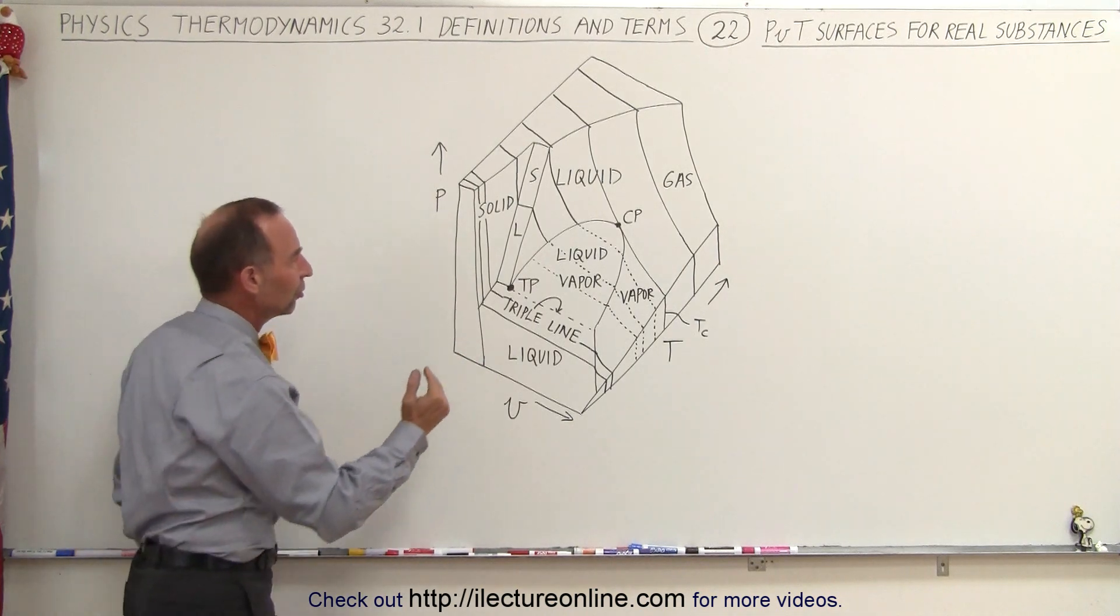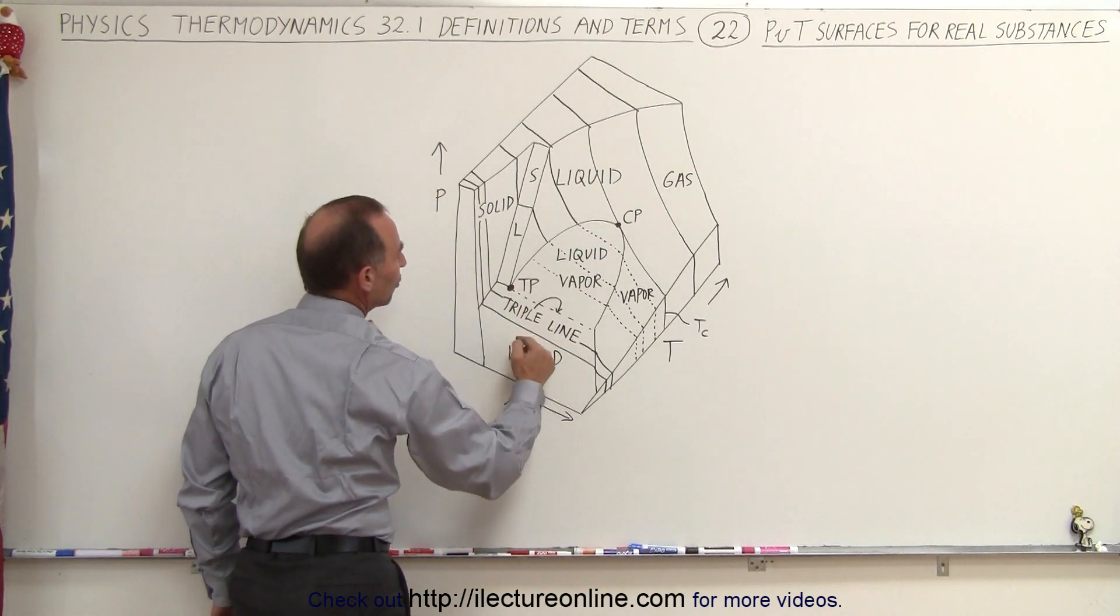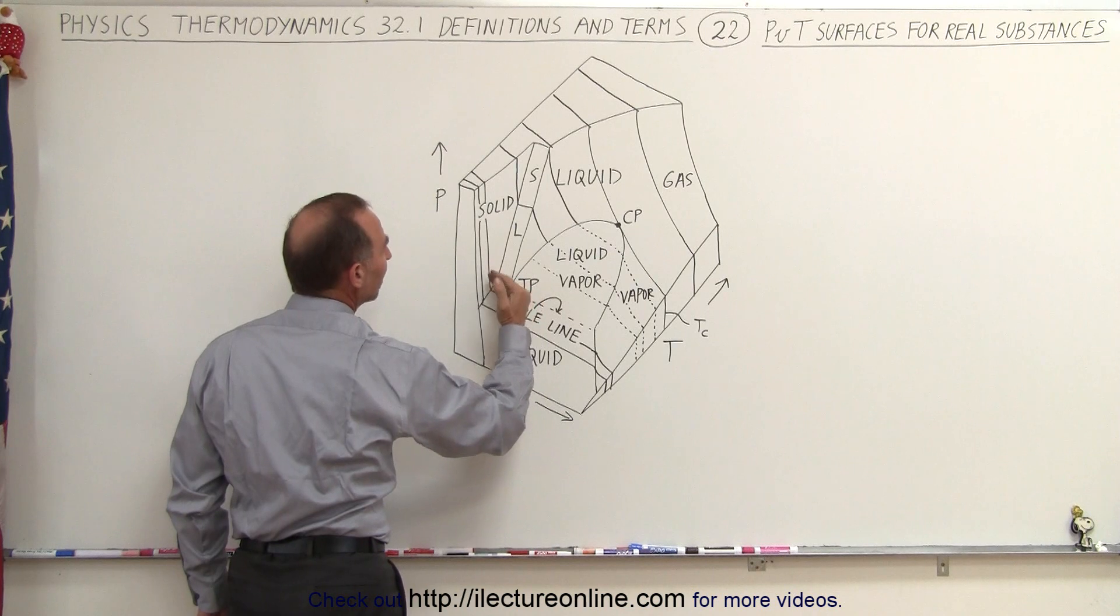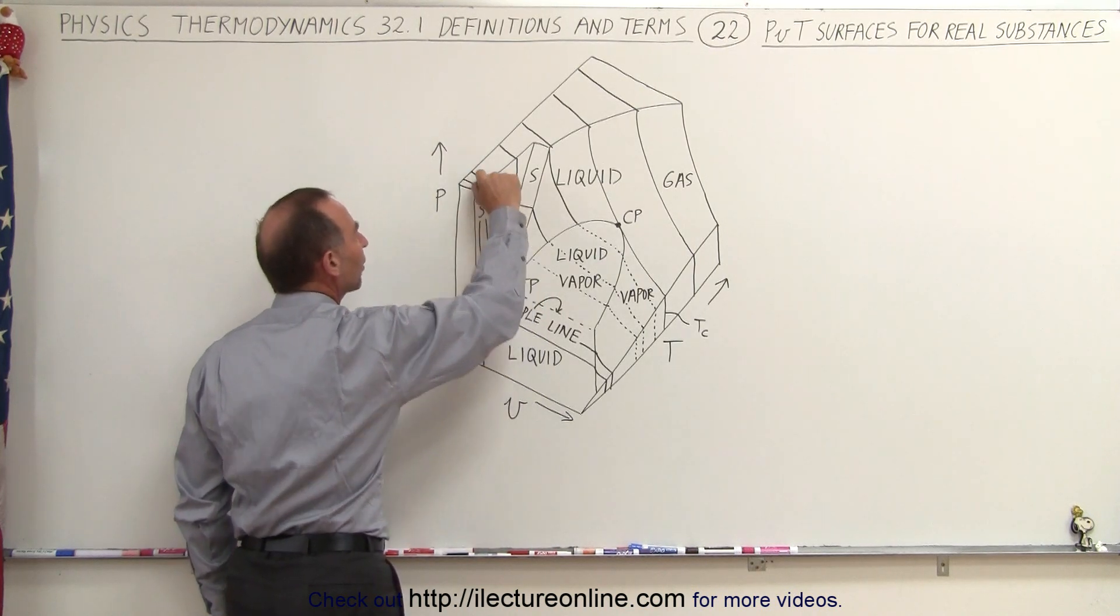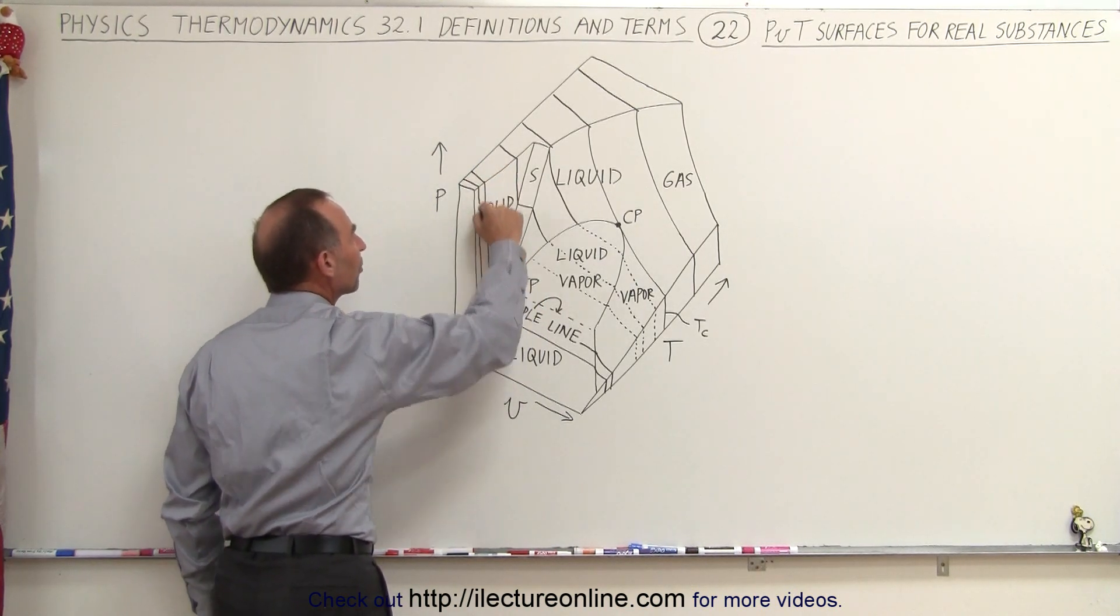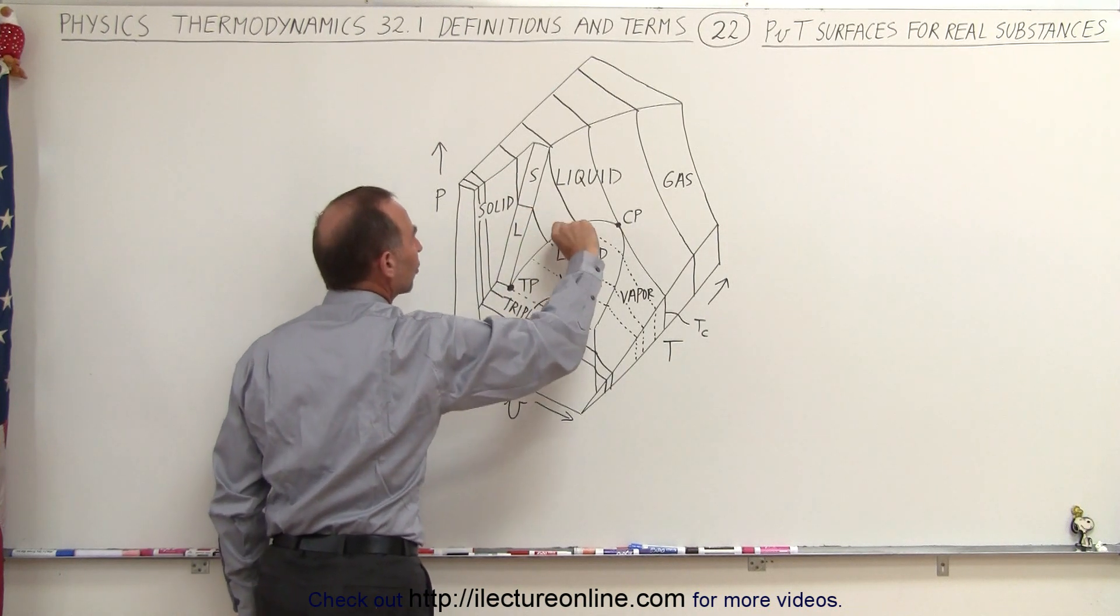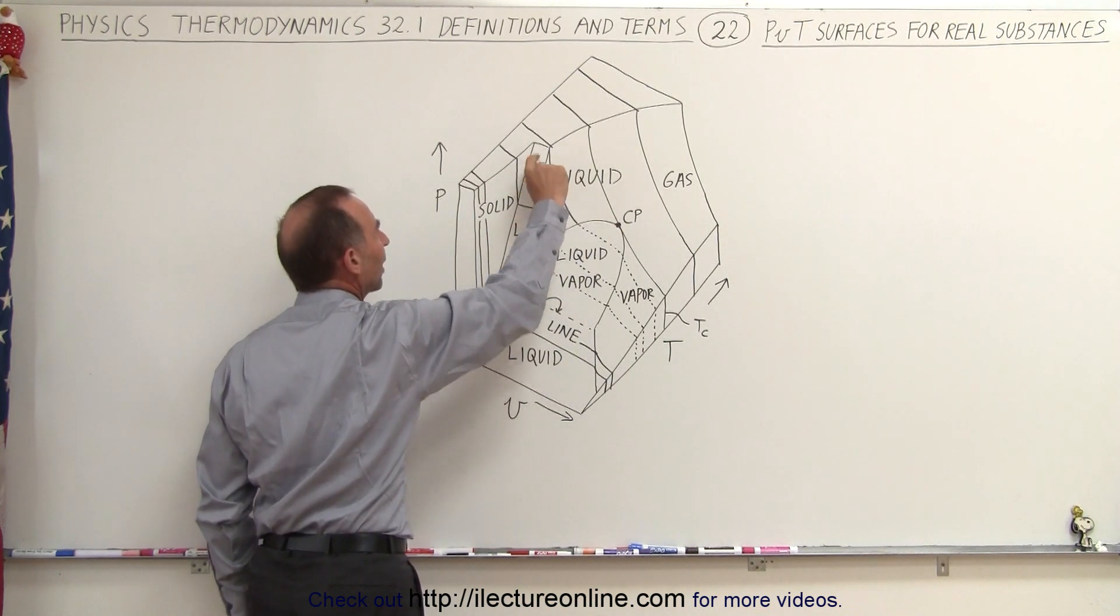Notice you have more of a step function at lower temperatures. When you want to go from a liquid state into a solid state, it requires a very large change in the pressure. With higher temperatures, the change tends to be more gradual.